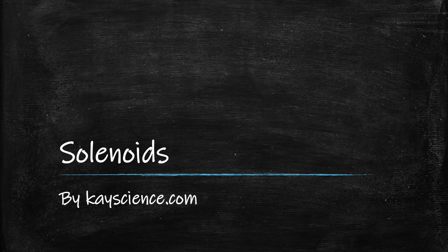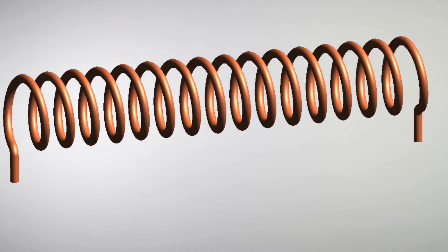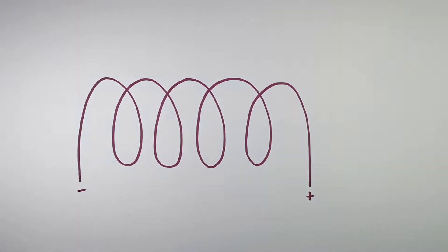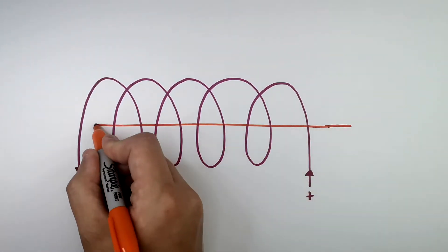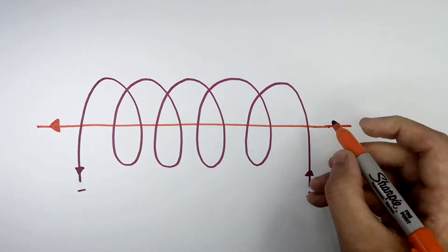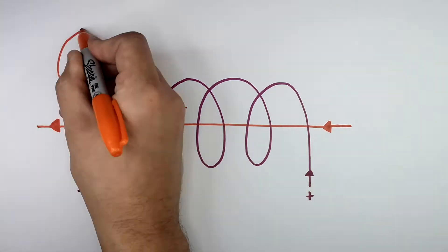Solenoids by kscience.com. This here is an image of a solenoid. A solenoid is simply a coil of wires, and when a current is passed through it, a magnetic field is going to be formed inside the coil and around the coil.